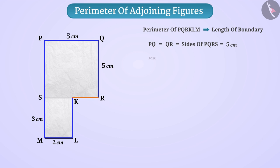Absolutely right. RK is equal to RS minus SK is equal to 5 cm minus 2 cm is equal to 3 cm. KL is equal to 3 cm. Similarly, LM is equal to 2 cm. Similarly, MP is equal to MS plus SP is equal to 3 cm plus 5 cm is equal to 8 cm.